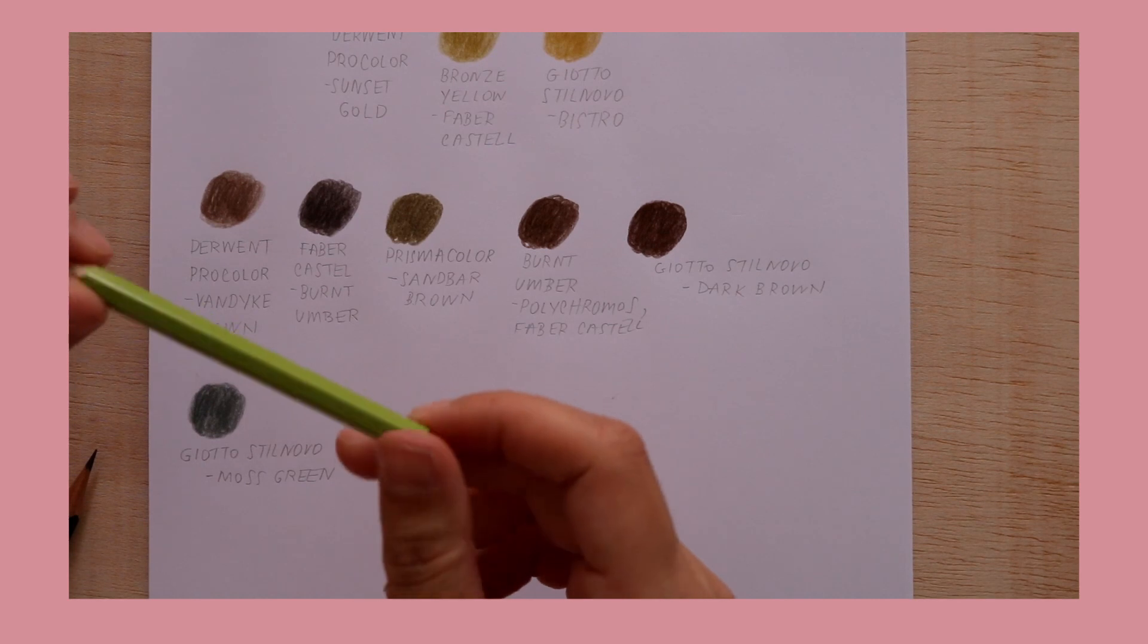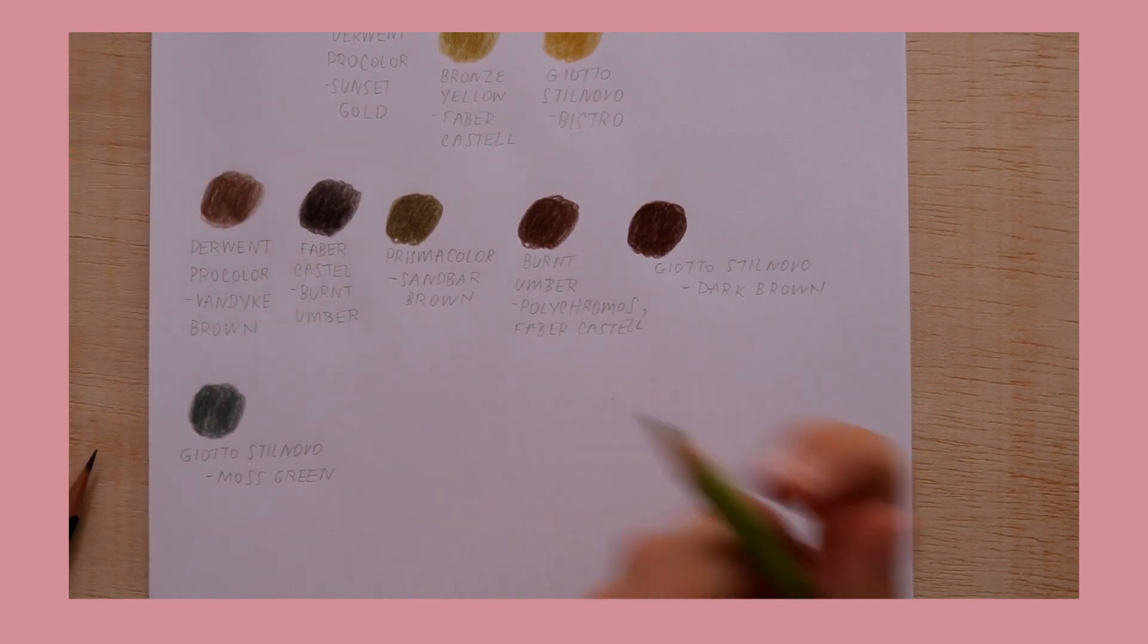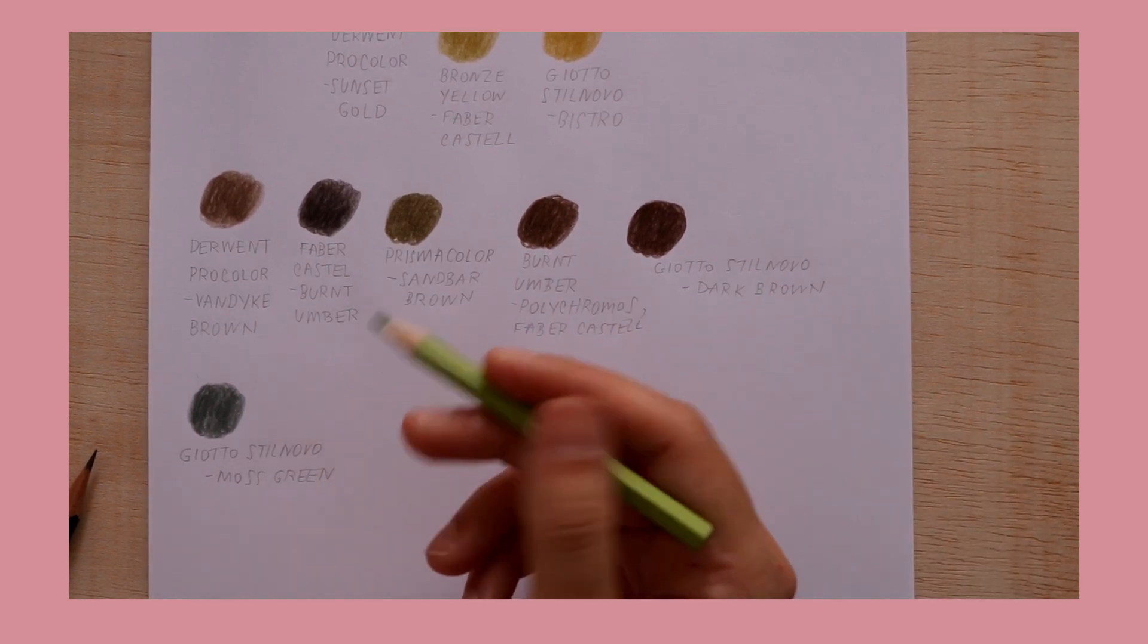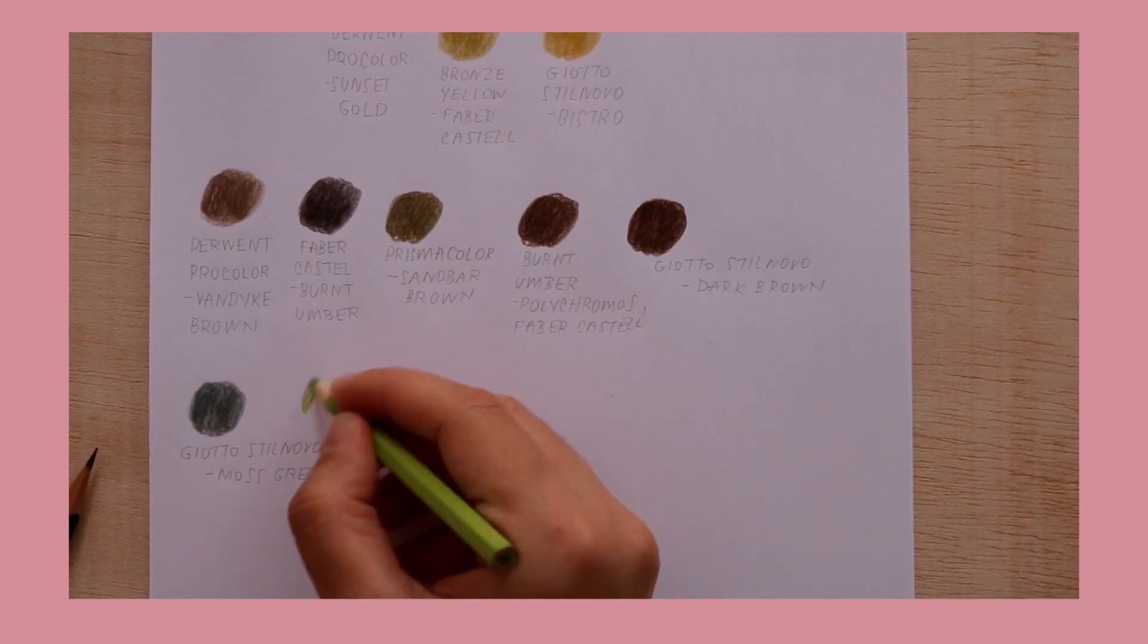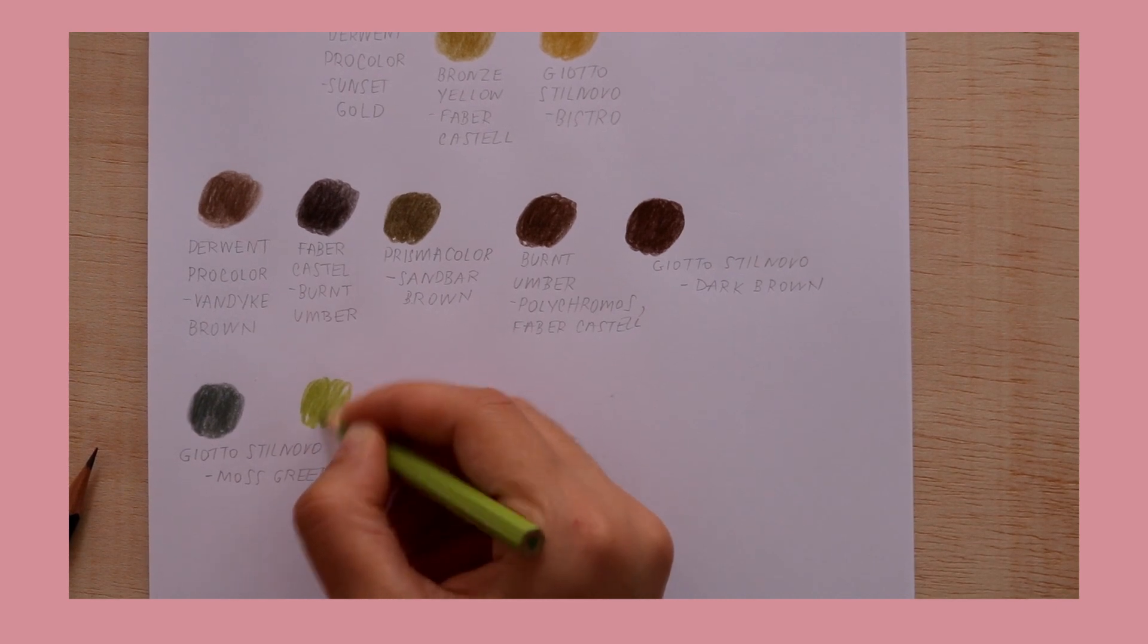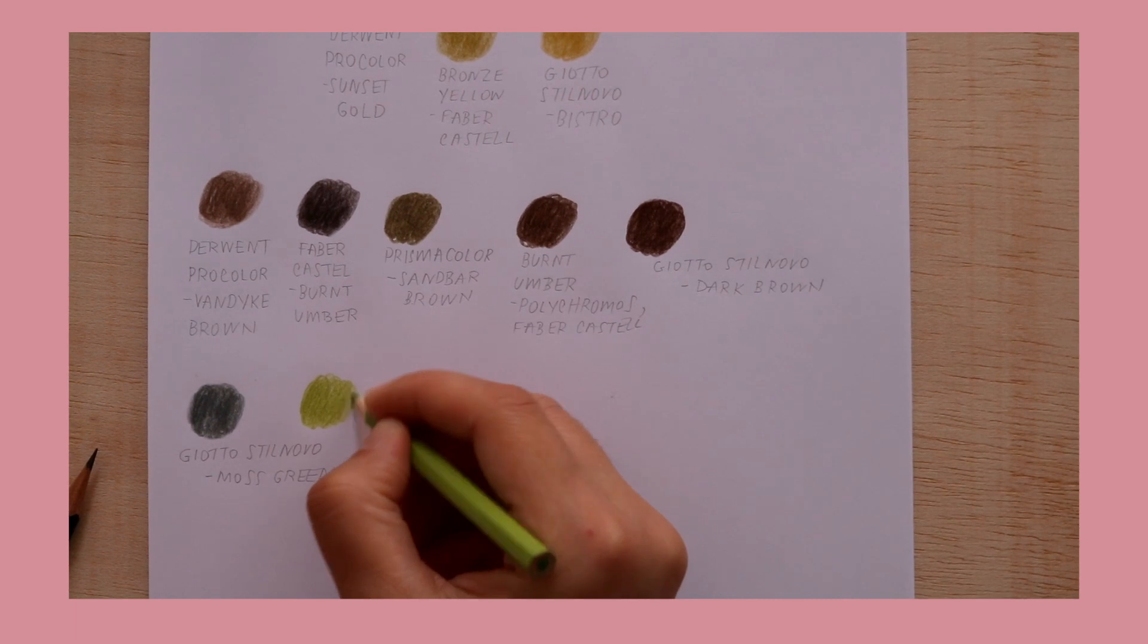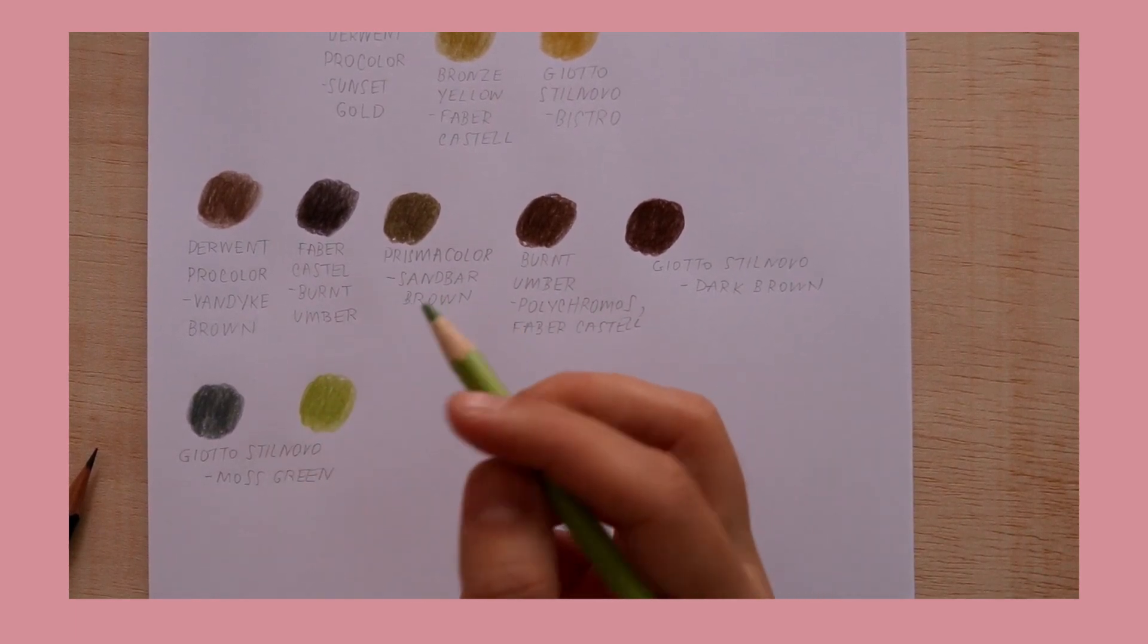Then this one is by Faber-Castell. I didn't know the name of this one because it's a kids coloring pencil, I'm afraid. But the shade is so nice. It's like this really light spring green, like apple green, I'm going to call it.